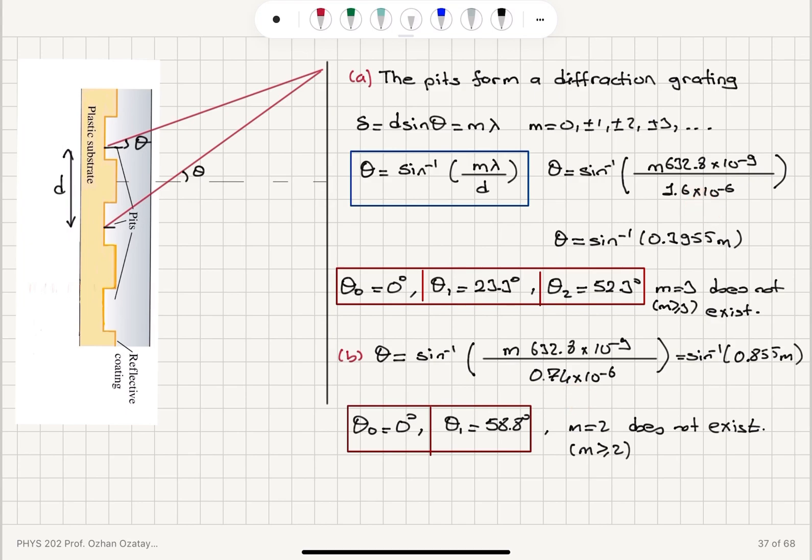Into this equation to calculate what values of theta are possible. And here we find that sine theta cannot be greater than 1. So M cannot be greater or equal to 3 in the CD case and M cannot be greater or equal to 2 in the DVD case.